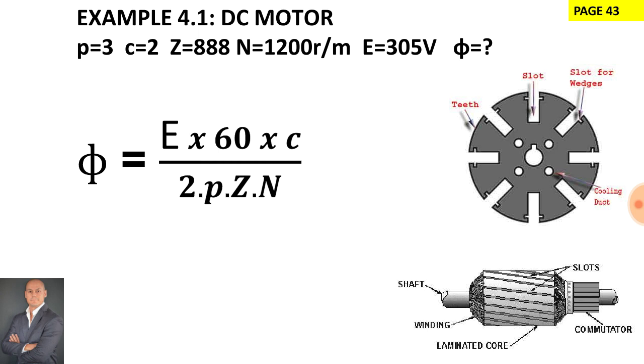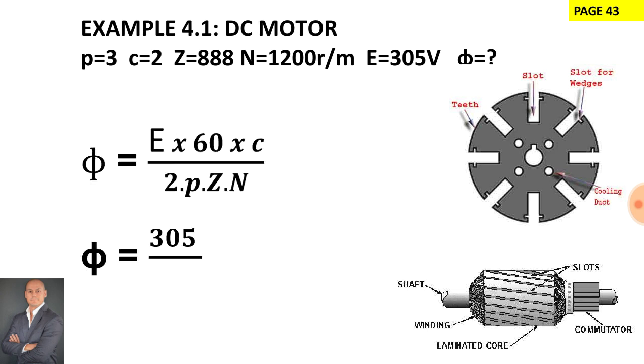Let's substitute all the values in. Our generated EMF is 305 volts and that is our constant 60 multiplied by the number of parallel paths and this is a wave-wound machine therefore the number of parallel paths is 2. There's our constant of 2 multiplied by the pole pairs. This is a six pole machine therefore there are three pairs and the total number of armature conductors is 888.